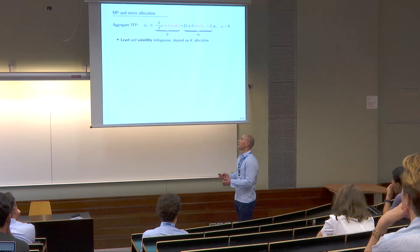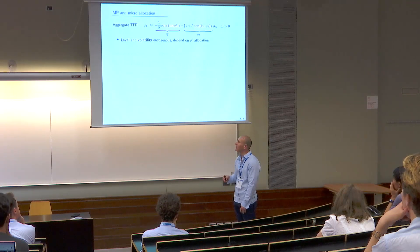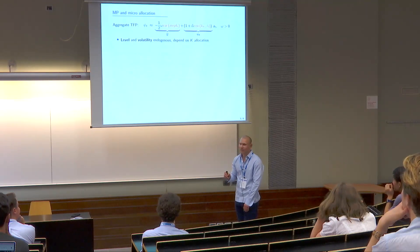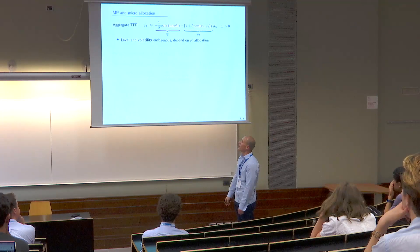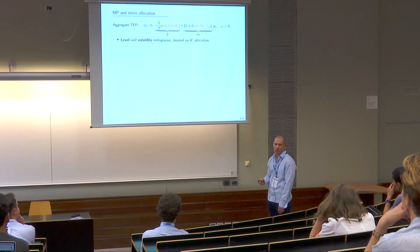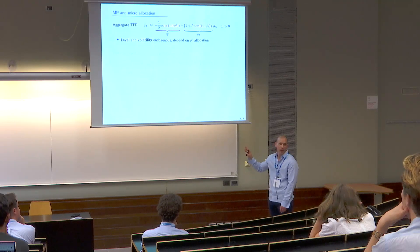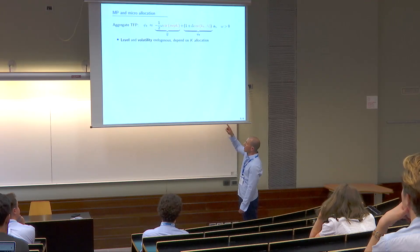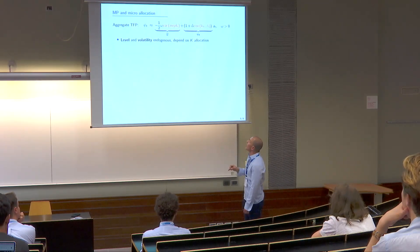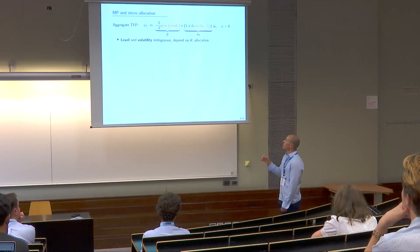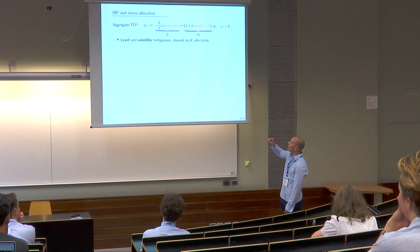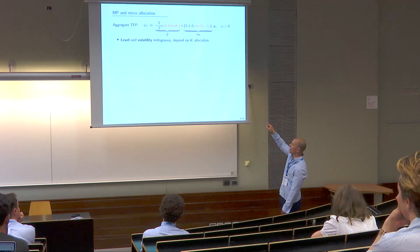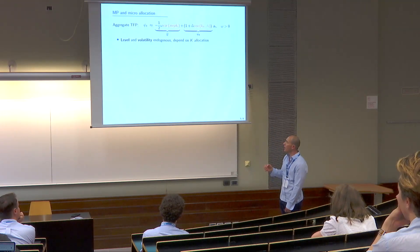Under our assumptions we can derive exact closed-form solutions for TFP — though second-order approximations give much sharper expressions. Aggregate TFP in logs — little psi_t — is an affine function of the exogenous shock A_t with a level term psi bar and a loading psi A, both endogenous and functions of different moments of the micro-level distribution. The level term psi bar is proportional to the cross-sectional variance in the marginal product of capital — a standard result from the misallocation literature that TFP losses from misallocation are proportional to variance in marginal products.